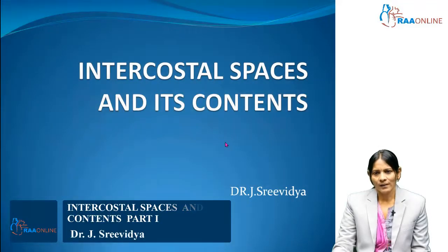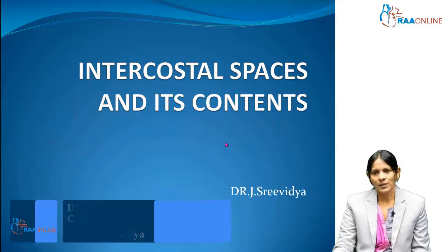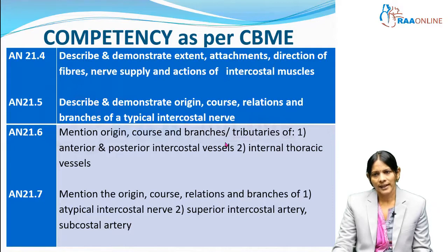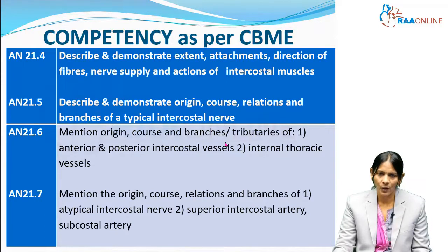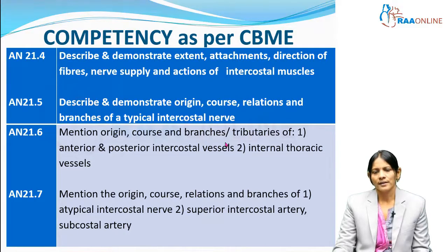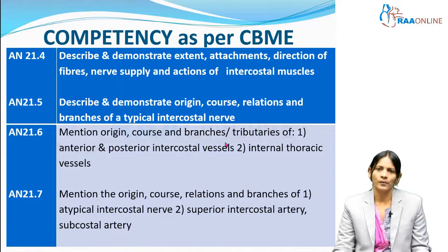Good morning, welcome to RAW Online. Today we are going to discuss intercostal spaces and their contents. In competency-based medical education, the topics covered would be under AI 21.4 to 21.7. It covers the attachment and actions of intercostal muscles, the contents of the intercostal space — namely the intercostal nerves (typical or atypical), the vessels including the anterior and posterior intercostal vessels, the internal thoracic artery, the superior intercostal artery, the posterior intercostal vessel, and the subcostal artery.